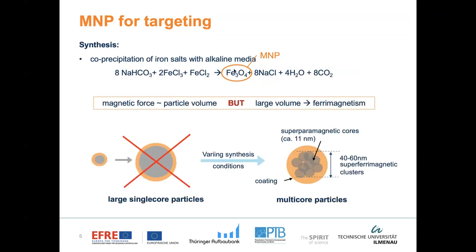Usually, it would be very good to prepare very large particles because the magnetic force is a linear function of the particle volume — meaning a large particle gives a large magnetic force to attract the particle into the eye. But on the other hand, a large volume causes very magnetic behavior, meaning we have coercivity and remanence and thus agglomeration. To avoid this, we don't prepare large single-core particles, but instead go for so-called multicore particles — a cluster of 40 to 60 nanometers consisting of very small single cores in the size of 10 to 12 nanometers.